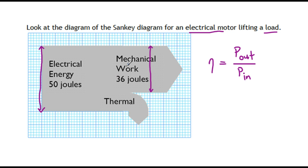There's two ways to get the efficiency from this diagram. One is you can take the values given: 36 joules of energy, so we're using energy out over energy in, over the 50 joules that we have to put in. And this gives us a 72% efficiency.